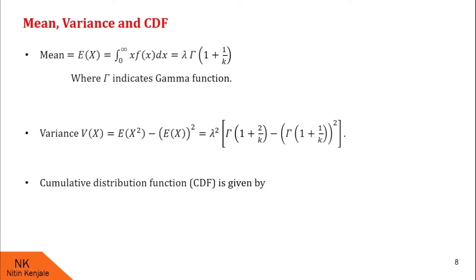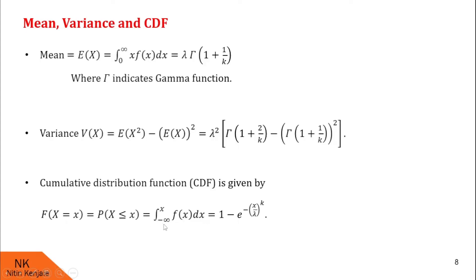Next we find the cumulative distribution function, also called CDF. It is denoted by capital F(x), which is the probability that X is less than or equal to x, computed as the integral of f(x) dx from negative infinity to x. Substituting the Weibull PDF, this integral evaluates to 1 minus e^(−(x/lambda)^k). So the probability that X is less than or equal to x is given by 1 minus e^(−(x/lambda)^k), where k is the shape parameter and lambda is the scale parameter.